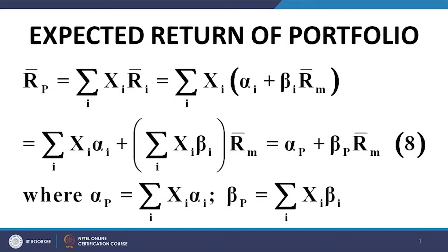The expected return of a portfolio is straightforward. The expected return E(R_p) = α_p + β_p·R̄_m, where α_p is the weighted average of the alphas of the constituent securities and β_p is the weighted average of the betas of the constituent securities.